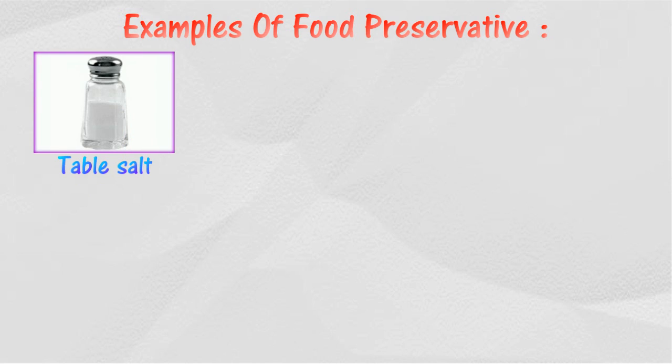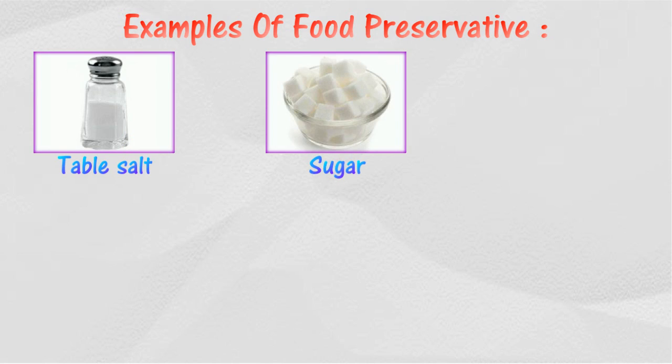Table salt is usually used to preserve fresh food and meat such as fish and bacon. Jelly, fruit jams, or fruit are preserved using sugar.